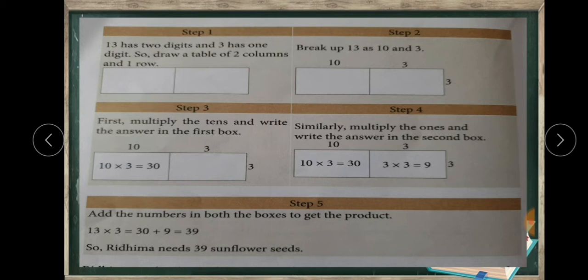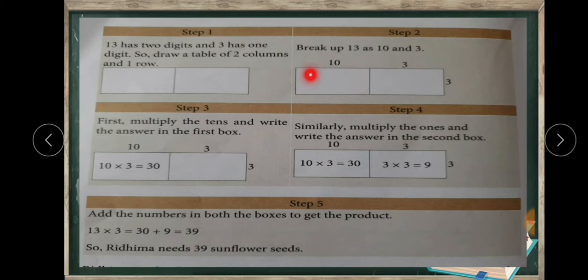The next step: we know that 13 can be split as 10 and 3. So we break up 13 as 10 and 3 and write it here — this is the column of 10 and this is the column of 3. Next, we have a one-digit multiplier, which is 3, so we write 3 here.